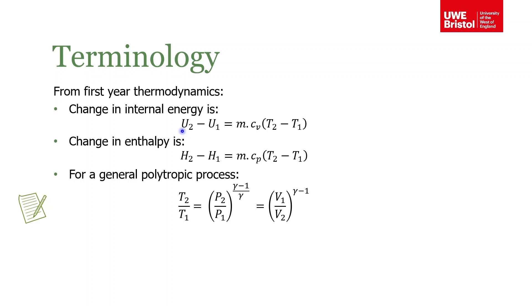The change in enthalpy, denoted by H, is equal to mass times the specific heat capacity at constant pressure times delta T.